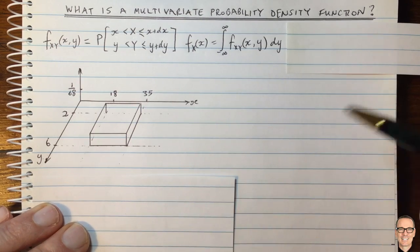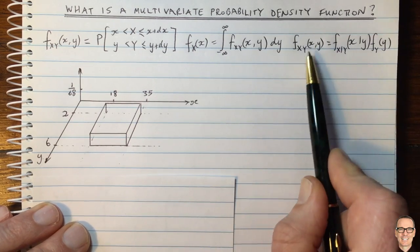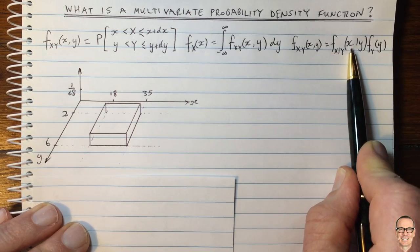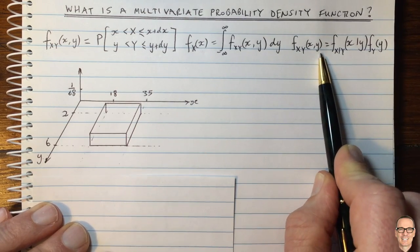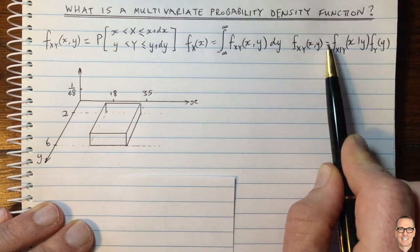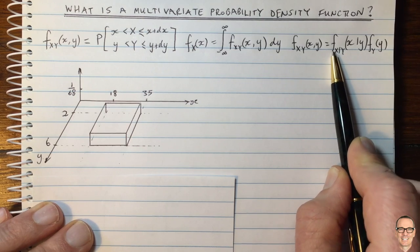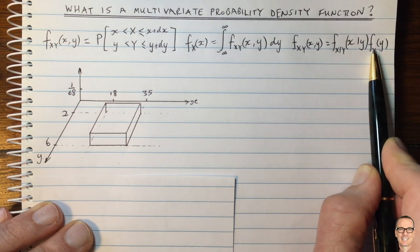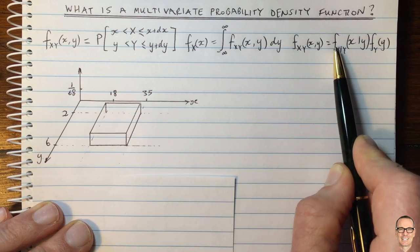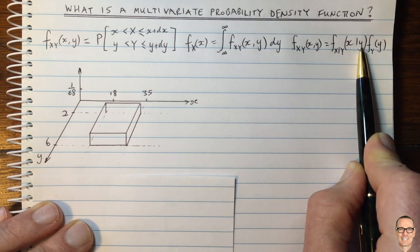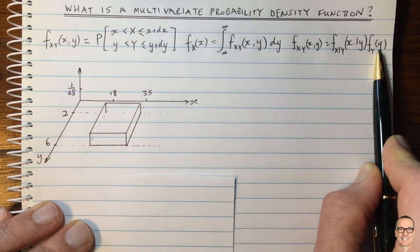There's another equation we'll be interested in — how the joint PDF relates to the conditional PDF. Following standard conditional probability equations, the joint PDF equals the conditional PDF of X given Y times the PDF of Y. That means the probability of getting a value of X for a particular value of Y, times the probability of actually getting that value of Y in the first place.